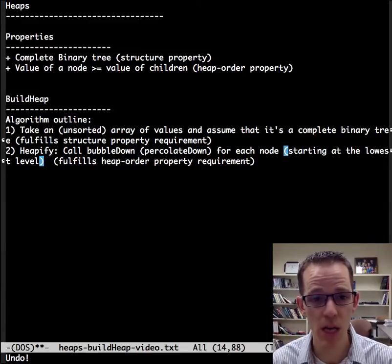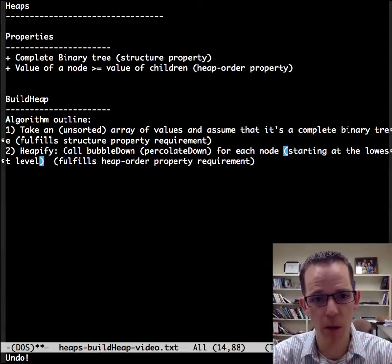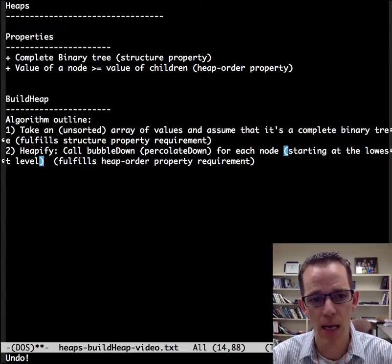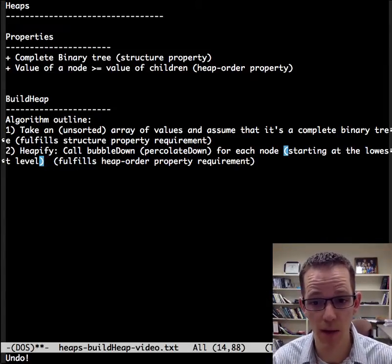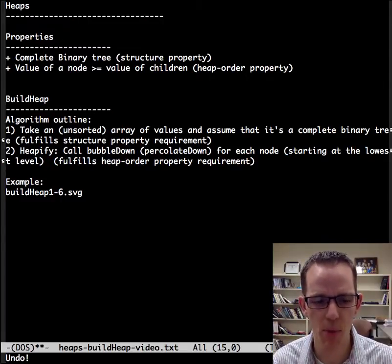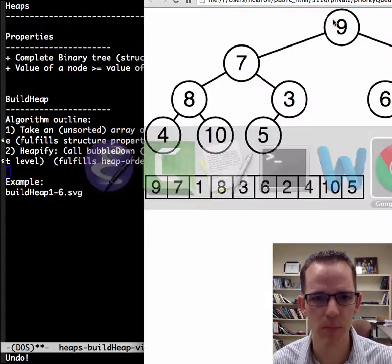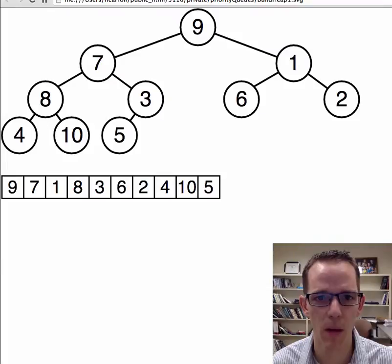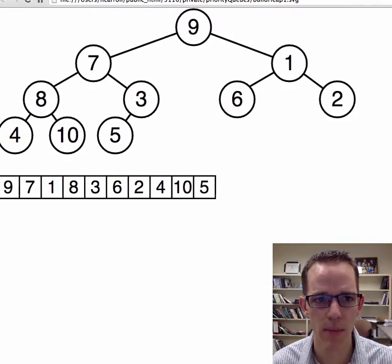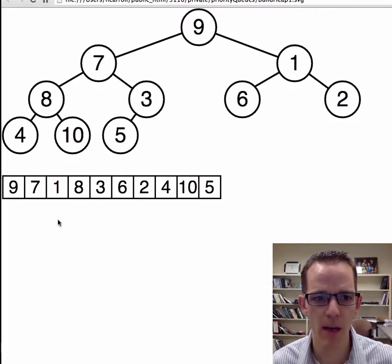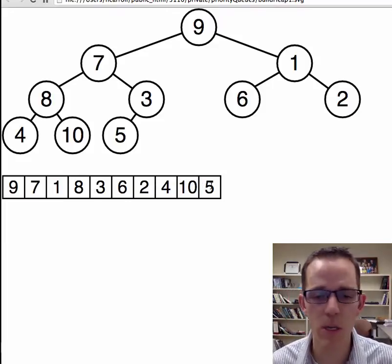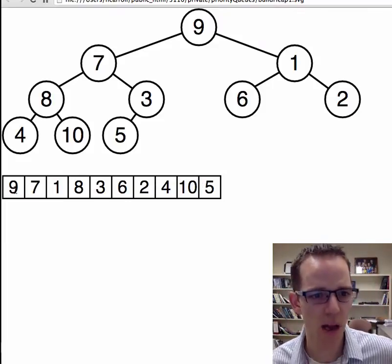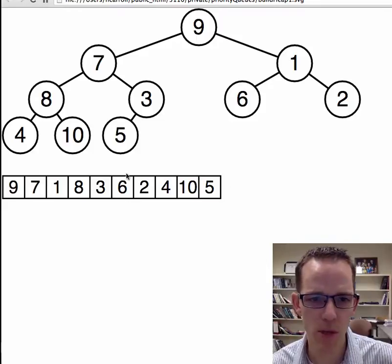If we do these two things, we say, hey, you're now a complete binary tree, and we're going to heapify it, then we have a heap. Let's see an example. All right. So here we have an array of unsorted numbers. Truth be told, I just asked Excel to randomize it, and there we go, random numbers.